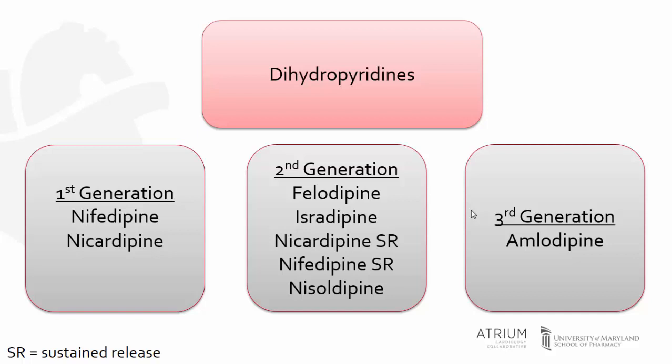Nifedipine immediate release, which is a first-generation dihydropyridine calcium channel blocker, has a very rapid onset of action and can actually be harmful in certain patients, such as when used in hypertensive emergency, due to the dramatic blood pressure lowering effects we can see. For these reasons, the first-generation dihydropyridine calcium channel blockers are rarely used orally for hypertension.